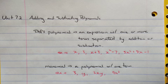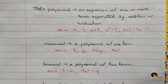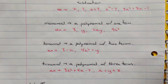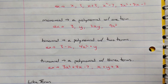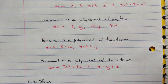Polynomial is the blanket term, but there are specific ones. A monomial is a polynomial with one term — for example, 3y, 2x, or 9x squared would each be monomials.